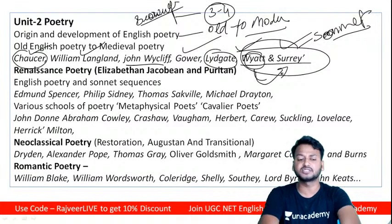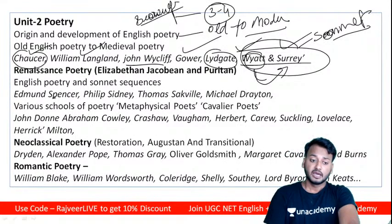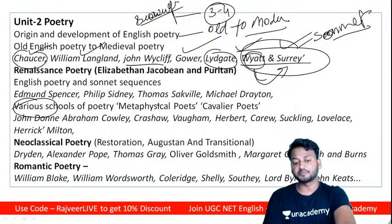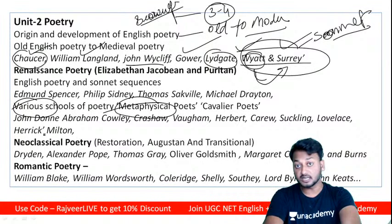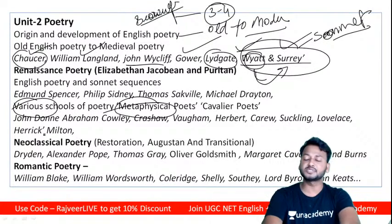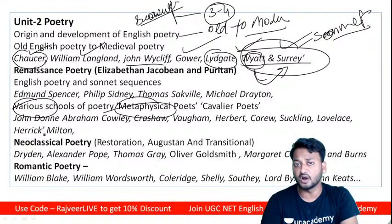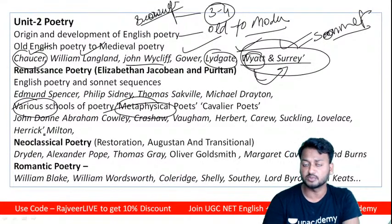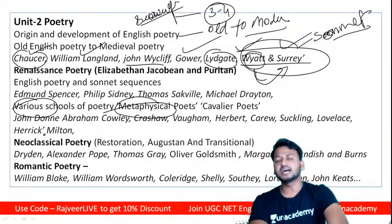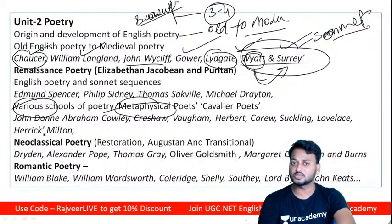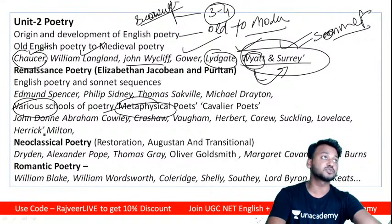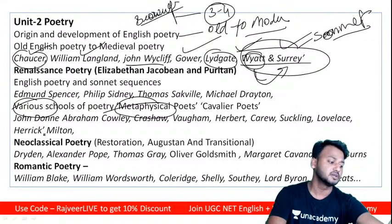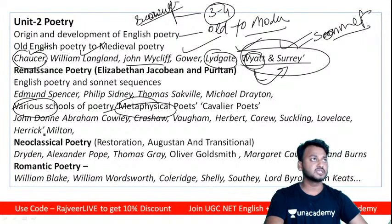You must also understand the Metaphysical School of Poets, including John Donne, Henry Vaughan, and Andrew Marvell. These are all important figures associated with Metaphysical poetry.